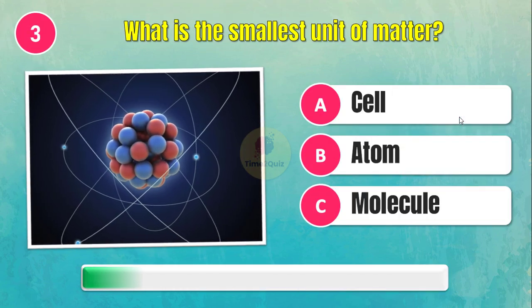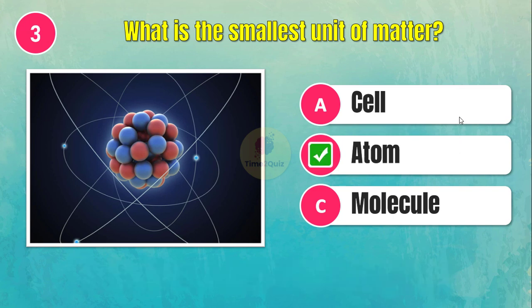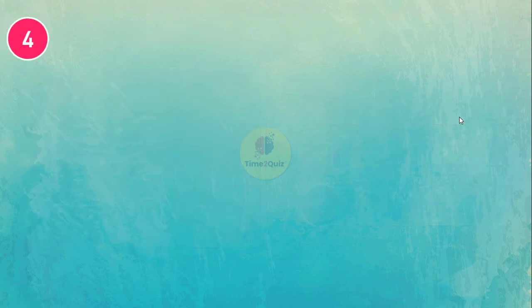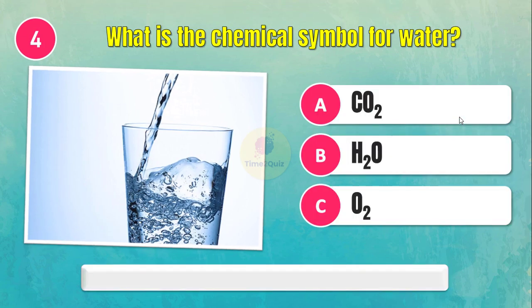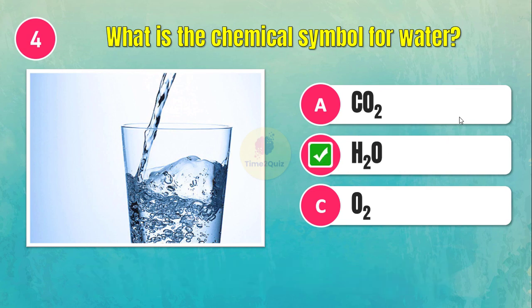What is the smallest unit of matter? Atom. What is the chemical symbol for water? H2O.